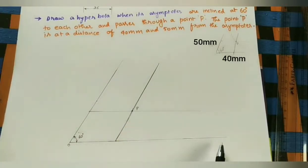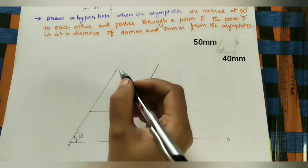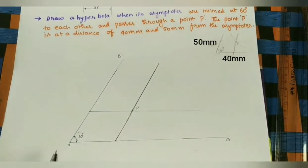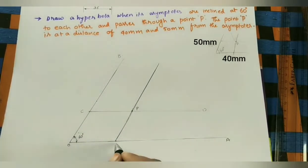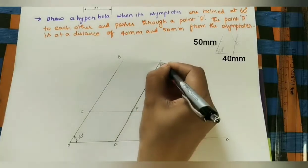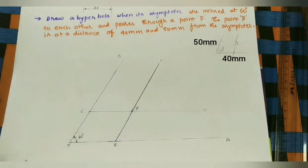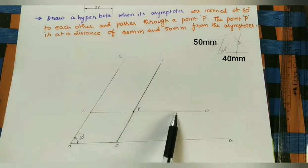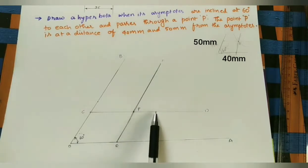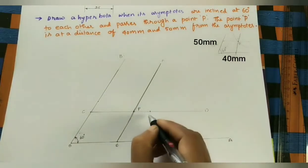Mark the names of the asymptotes: this axis is O-A, this axis is O-B, and the parallel construction lines are C-D and E-F. The intersection point of the two asymptotes is P, making 60 degrees. After marking the P point, we take some additional points — these points do not need to be at equal distances; we can take any number of points at any distance.